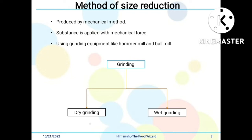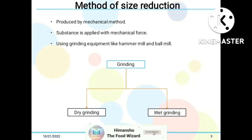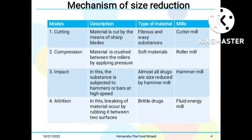Emulsions are formed when any two immiscible liquids come together. Now, regarding the mechanism of size reduction, there are four modes. The first is cutting: the material is cut by means of sharp blades. The type of material suitable for cutting is fibrous and waxy materials.